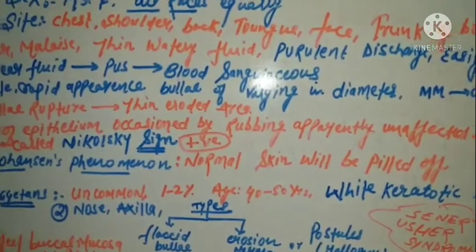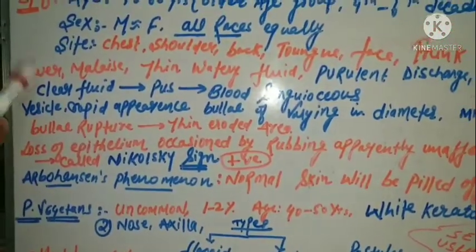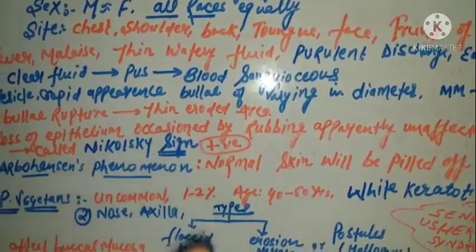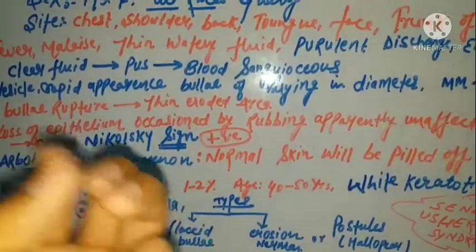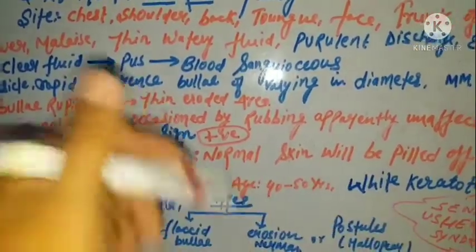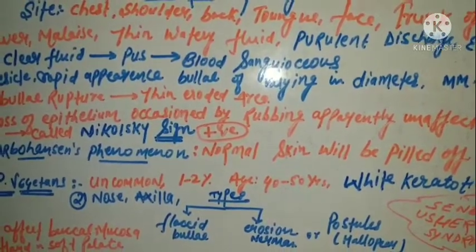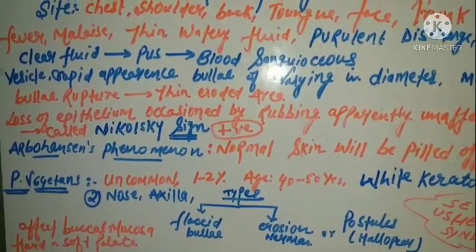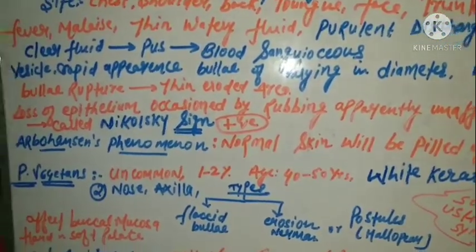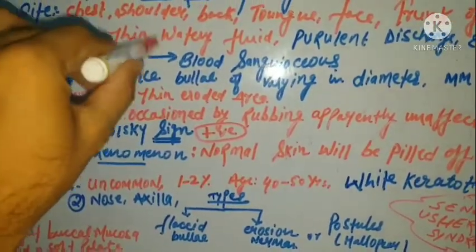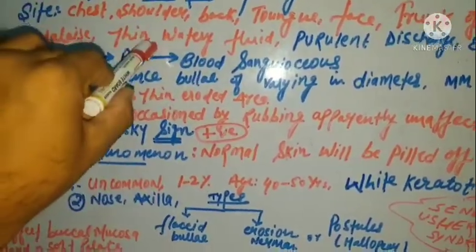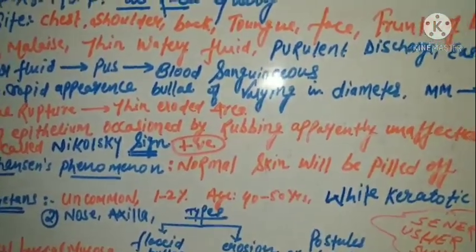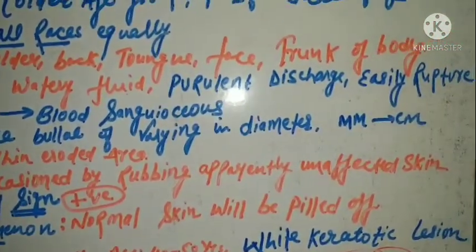Symptoms occurring in pemphigus include fever and malaise. When the vesicle ruptures, it releases a thin watery fluid with purulent and sanguineous discharge. The fluid in pemphigus vesicles has different characteristics from other vesicular conditions. These vesicles get easily ruptured.